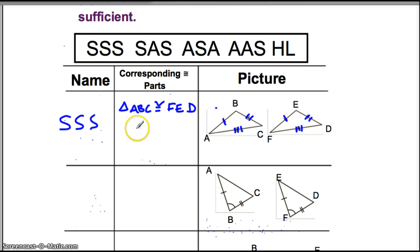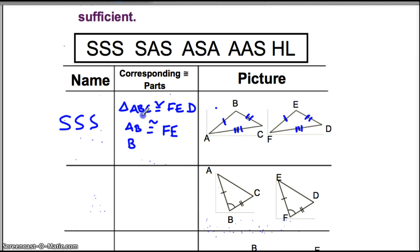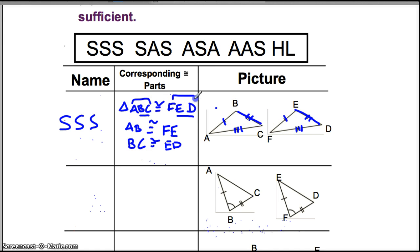What I'm implying by writing it that way is that side AB is congruent to side FE. And side BC is congruent to side ED — BC is congruent to ED. That also implies that AC, because they're on the outsides, AC is congruent to FD.